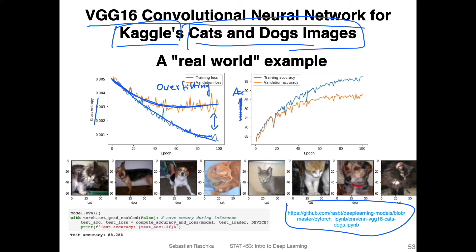Even if I train longer, I may still not be able to improve the model. On the right-hand side, the same is true for accuracy — the training accuracy goes up, continues to go up, maybe even 97%. But for the validation set, it goes up and then tends to stagnate, maybe around 88%. I also evaluated performance on an independent test set after training completed, and I also got 88% — approximately matching the validation set, which is expected.